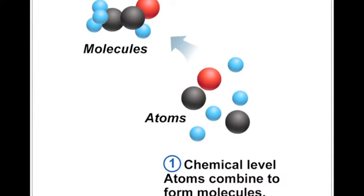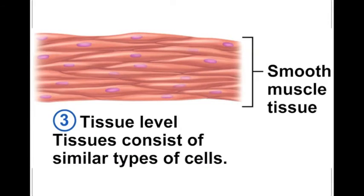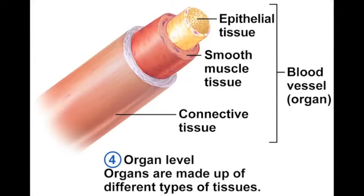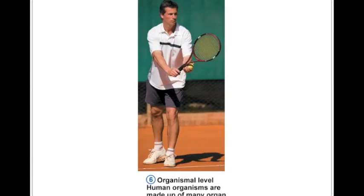In review, the six levels starting from the most basic would be: chemicals, which combine to produce cells — here you're looking at a smooth muscle cell. Cells combine to produce tissues. When you have multiple tissues combined together, that produces an organ. When you have multiple organs working together, this produces an organ system. And then finally, the multiple organ systems come together to produce the organism.